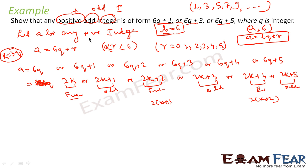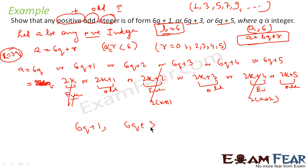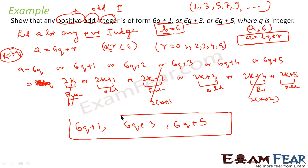Since the question asks about positive odd integers, we ignore all the even forms. After removing the even numbers (6q, 6q+2, 6q+4), the remaining values are 6q+1, 6q+3, and 6q+5 — which are the three odd forms. Therefore, any positive odd integer can be written in the form 6q+1, 6q+3, or 6q+5, which is exactly what we needed to prove.